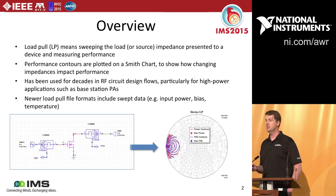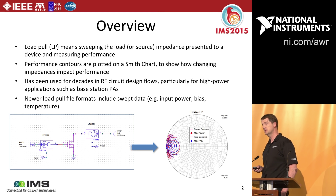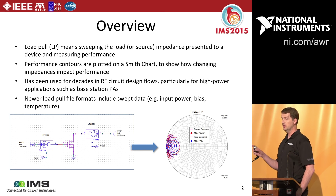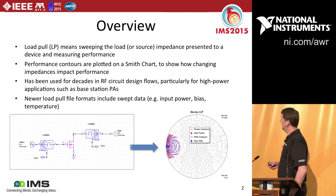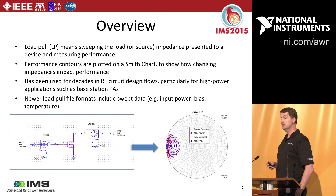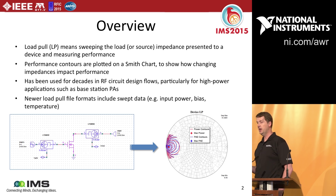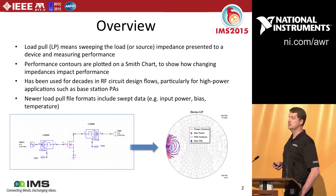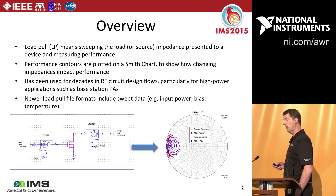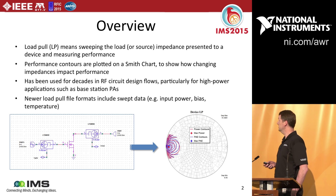So what is load pull? It's a very simple but powerful concept. It simply means sweeping the load or source impedance presented to an active device and measuring its performance. Performance contours are plotted on a Smith chart, and that shows the designer how changing the impedances impacts the device's performance. It's been used for many years in RF circuit design flows, particularly for high-power applications such as base station PAs.